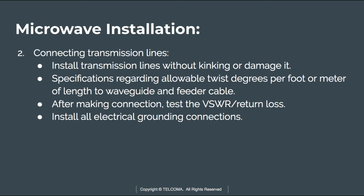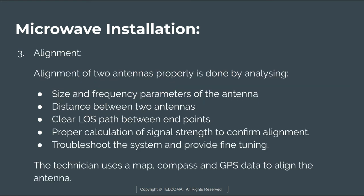Install all electrical grounding connections to ground the antenna system. The next step is alignment — the transmitting and receiving antennas must be properly aligned. Note the size and frequency parameters of the antenna before installation, measure the distance between the two antennas, verify a clear line-of-sight path between endpoints, and perform proper signal strength calculations to confirm alignment. Technicians use a map, compass, and GPS to align the antenna, with final troubleshooting and tuning completing the alignment process.